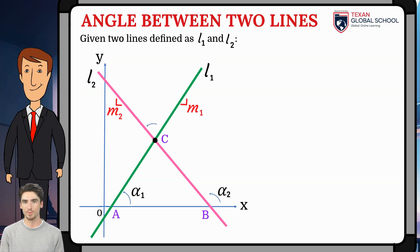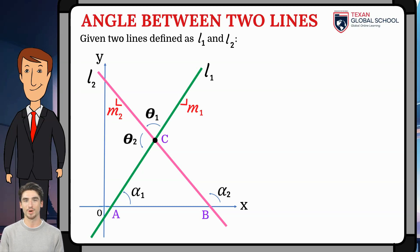For angle theta1, the initial line is L1 and its terminal line is L2. And for angle theta2, the initial line is L2 and its terminal line is L1. We can see that a triangle A, B, C is formed, in which theta1 is equal to angle C because it is opposite by the vertex.